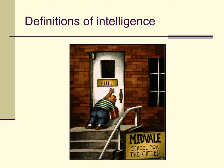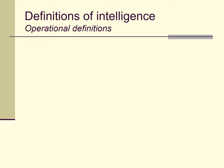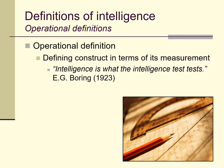Starting with definitions of intelligence. Intelligence is a construct — it's an abstraction, but something we believe we can measure and quantify in some way, probably many different ways. When we think about the relationship between these ways of measuring and the thing we're trying to measure, we're grappling with the idea of operational definitions. An operational definition is a definition of a construct in terms of how it's measured, and operational definitions exist throughout science.